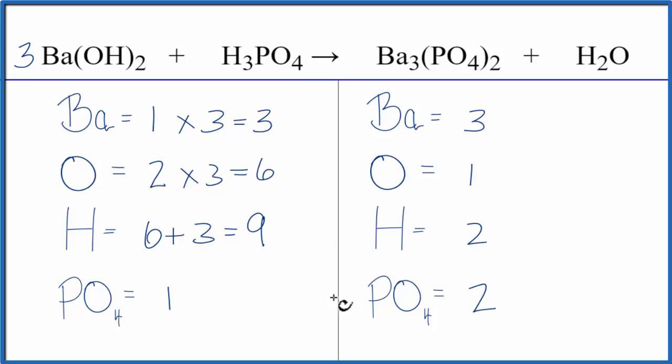Why don't we balance the phosphate next? I like to leave the hydrogens and oxygens till last. So we could put a coefficient of two in front of the H₃PO₄. So we have one of these times two. One phosphate times two. So those are balanced.